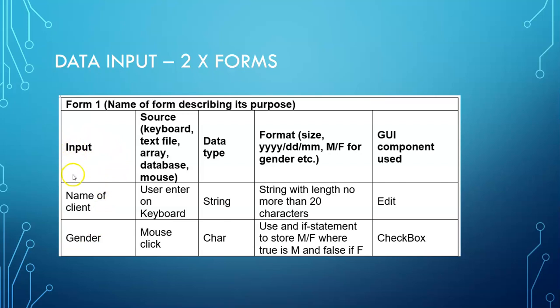Here in the first column you will describe what the input is. Then you will describe the source. You only need to write down source here. These are just examples for you.